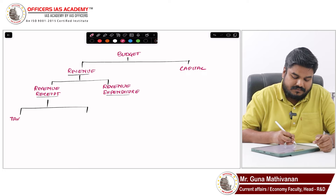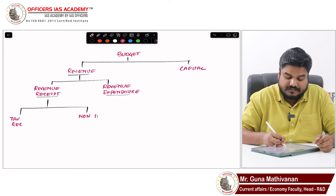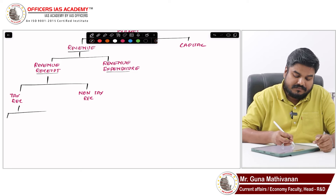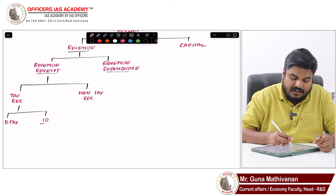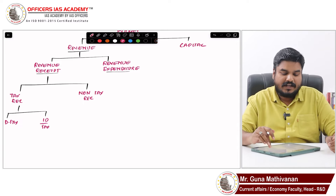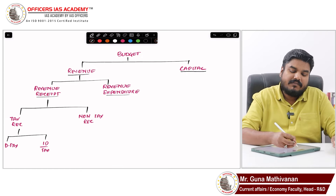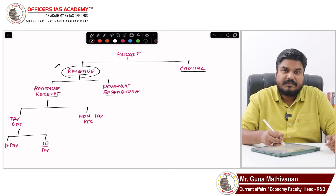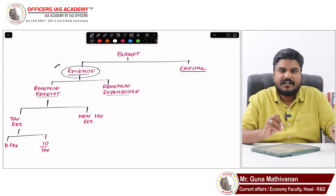Revenue receipt is further divided into tax receipt and non-tax receipt. Tax receipt is further divided into direct tax and indirect tax. So the budget is divided into revenue and capital components. The revenue component has revenue receipt and revenue expenditure. Revenue receipt has tax revenue and non-tax revenue, and tax revenue has direct tax and indirect tax.